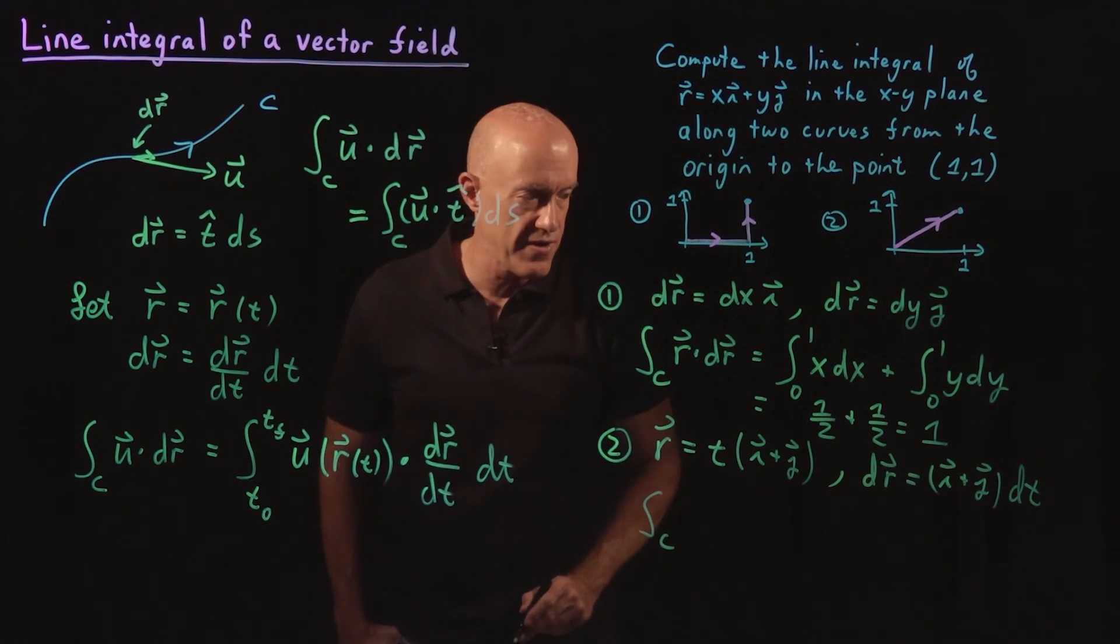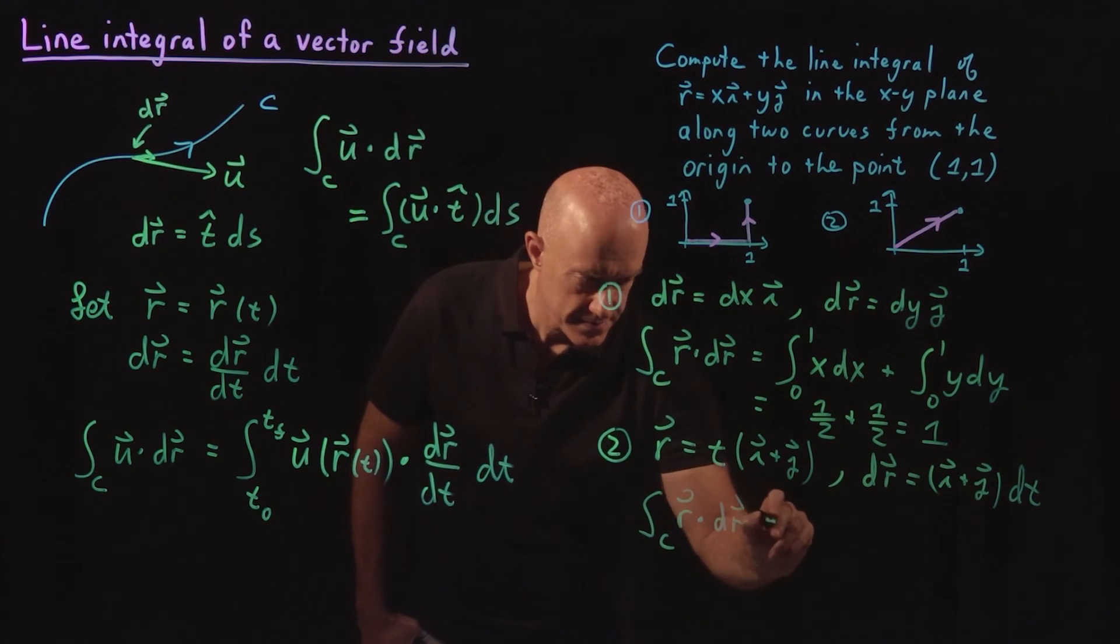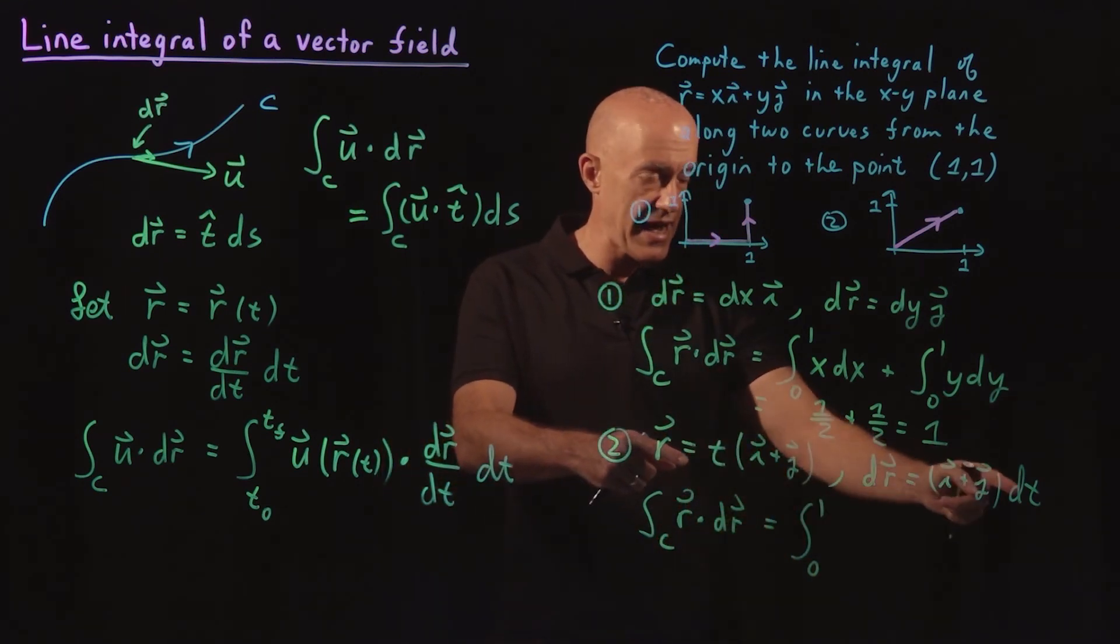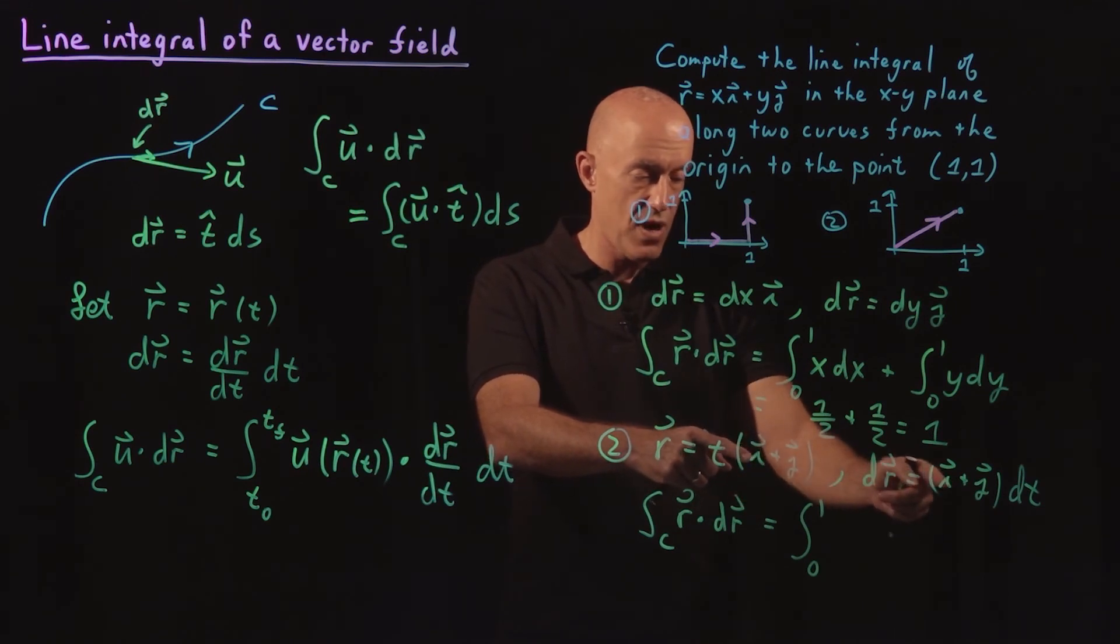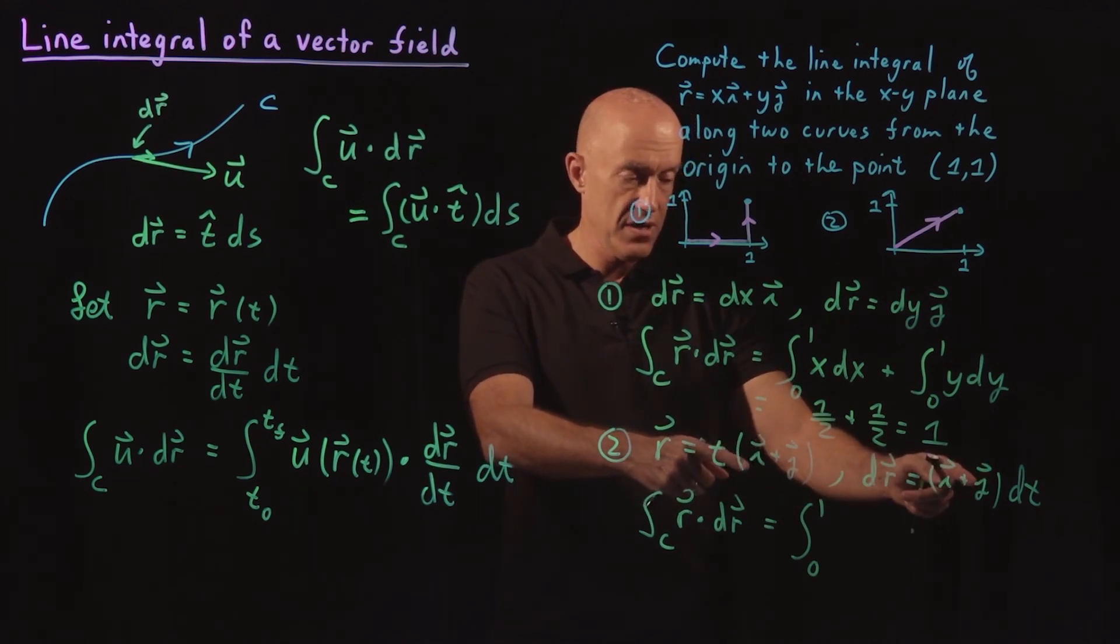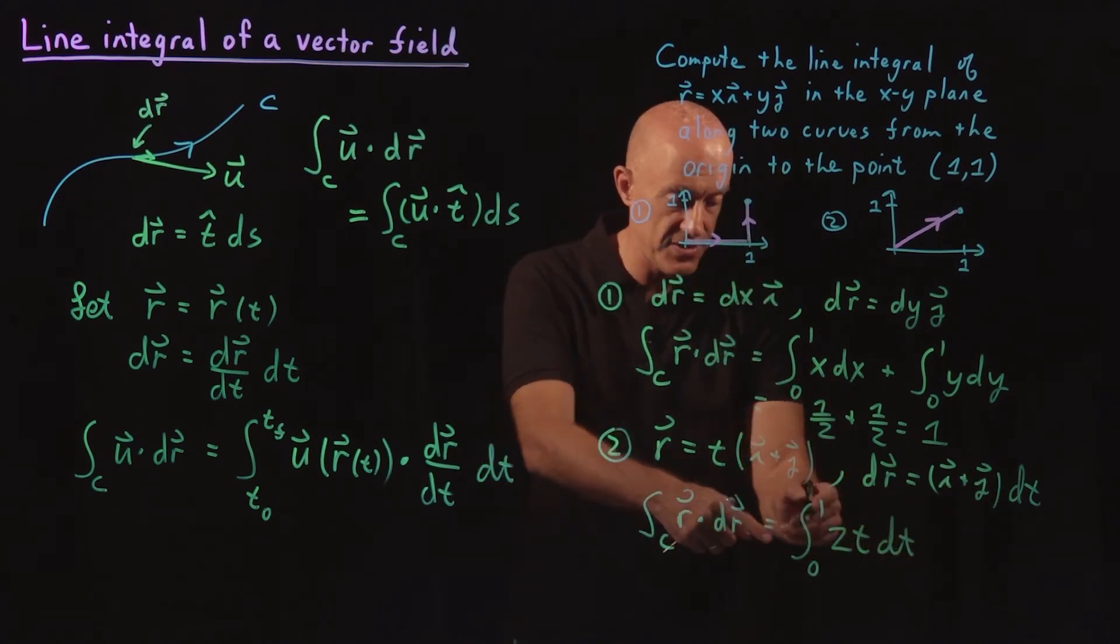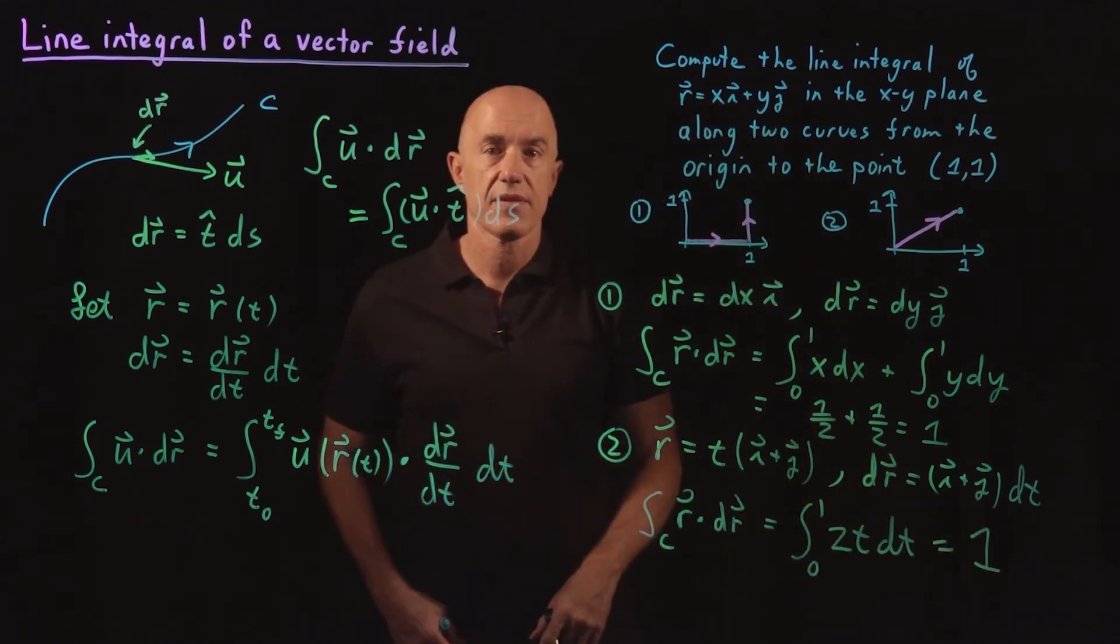Then we have our integral along the curve of R dot DR. So t goes from 0 to 1, the integral from 0 to 1 of R dot DR. So we have i dot i is 1, j dot j is 1, the cross products are 0. So we end up with 2t dt. And that's t squared over 2. The 2s cancel, from 0 to 1. And again we get just 1.